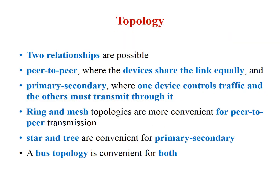A topology is a geometric representation of relationships between links and the linking devices. Two relationships are possible with topology: peer-to-peer and primary-secondary. In peer-to-peer, the linked devices share the capacity of the link equally. In a primary-secondary relationship, the primary device controls the traffic of the link and the secondary devices have transmission over the link. We can group our topologies into these two relationships. Ring and mesh are convenient for peer-to-peer, while star and tree are suitable for primary-secondary. The bus topology is suitable for both.